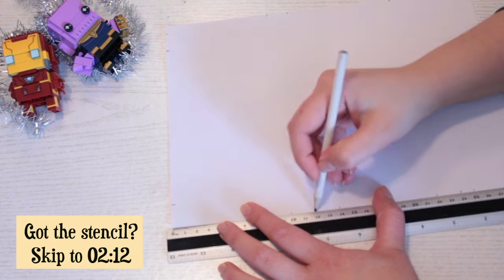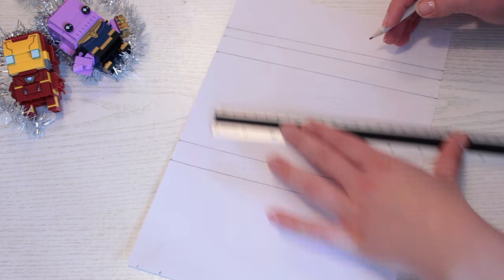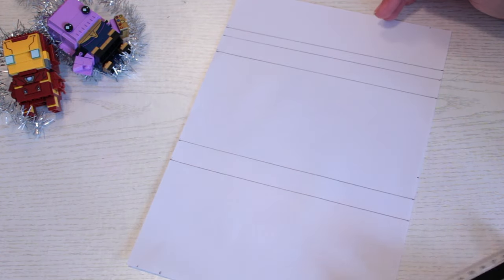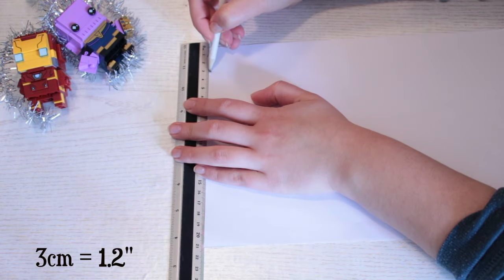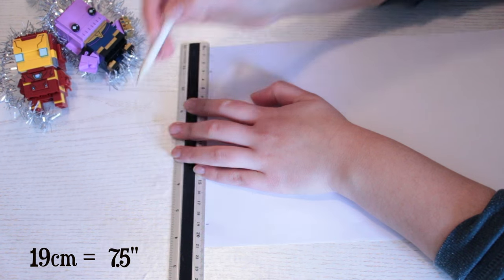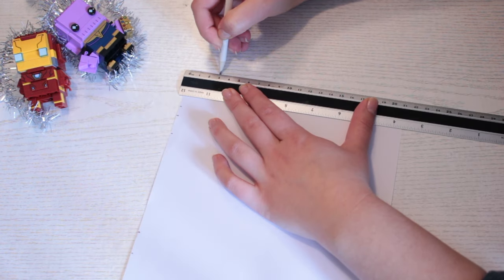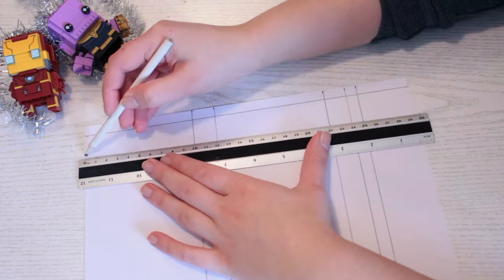Do this on the opposite side as well and make lines between the markings. On the short side of your paper, measure and mark 1, 3 and 19 cm. Do the same on the opposite side and make lines between the markings.